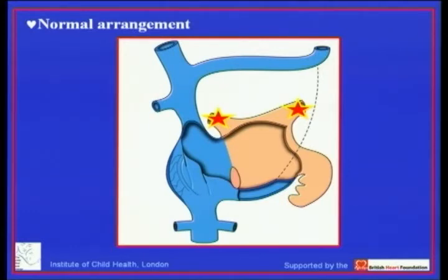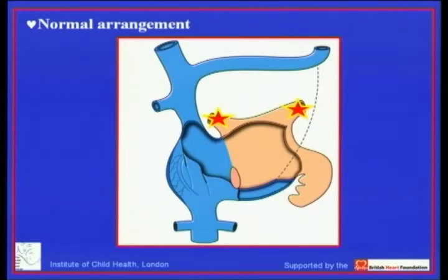From experience in treating arrhythmias, we now know there is marked variation in the number of veins opening on both sides, and some veins can open directly into the roof of the left atrium. Basically, we can consider two veins from the left and two veins from the right, opening by four orifices at the corner of the left atrial roof.